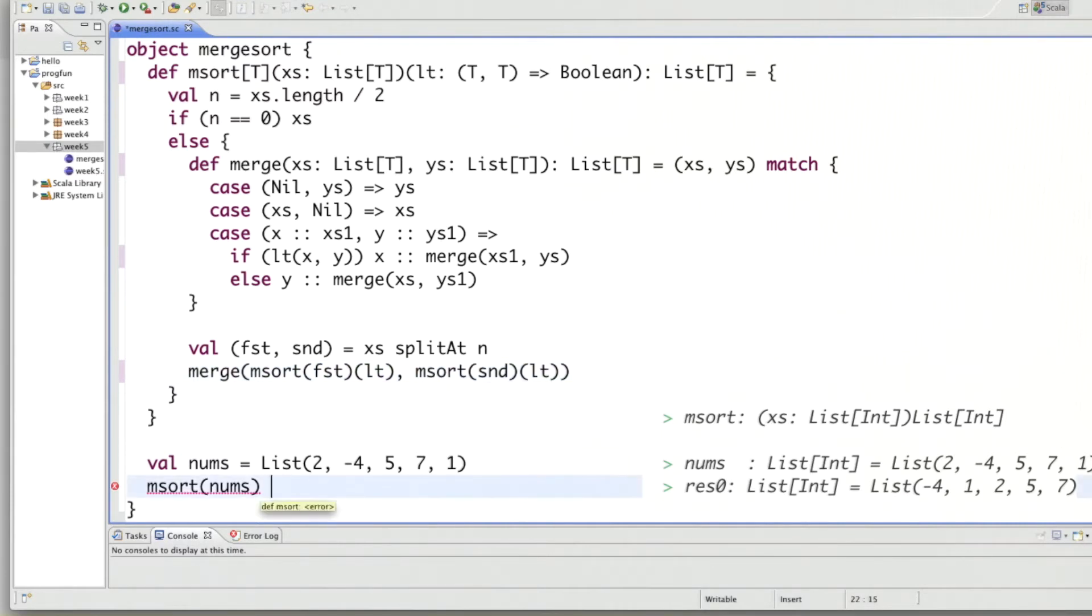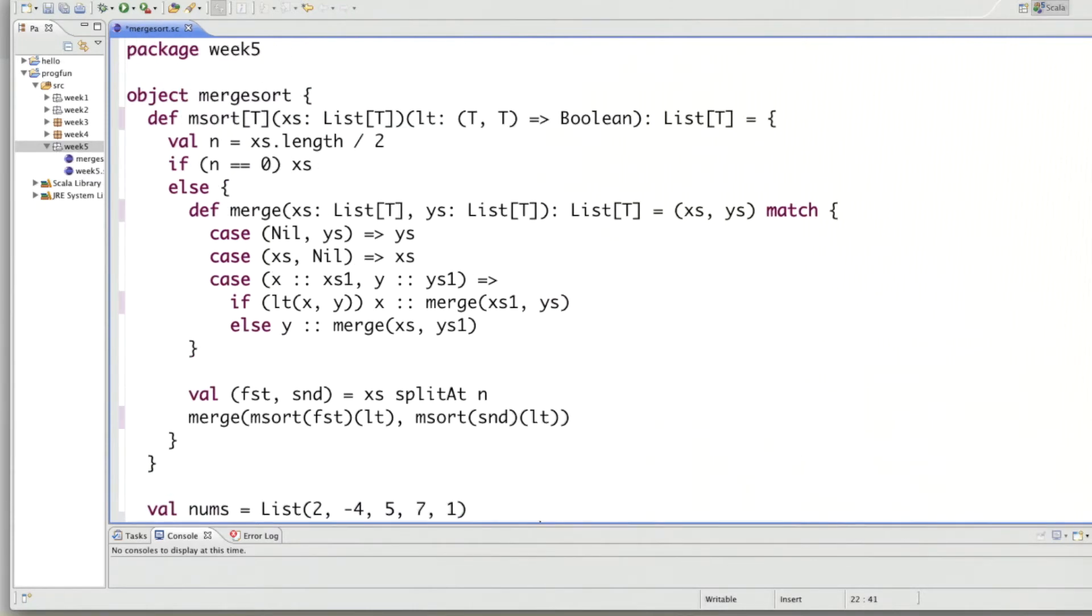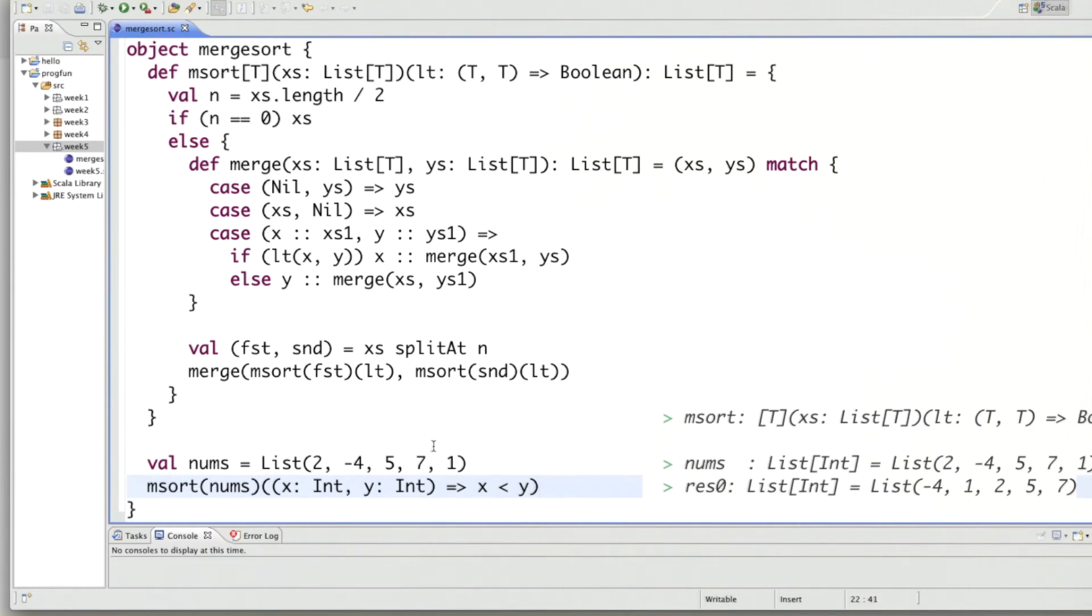And finally, for the numbers here, I have to pass the right version of lt into numbers. So one way to do that would be to say, let's take an int x and a y, which is also of type int and return x less than y. And that would compile. And if we run it, we get the same result as before.